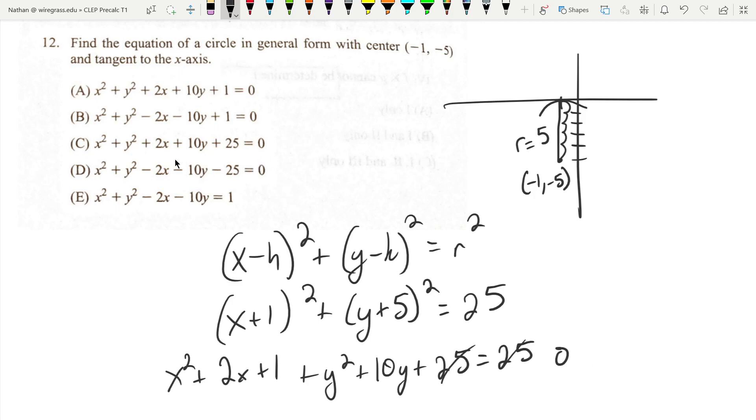And let's see, we have x squared and y squared, of course, plus 2x plus 10y plus one. I believe that is A.